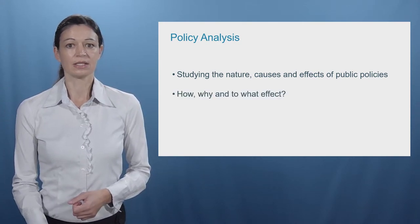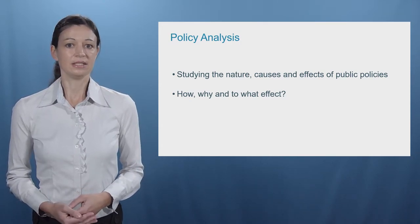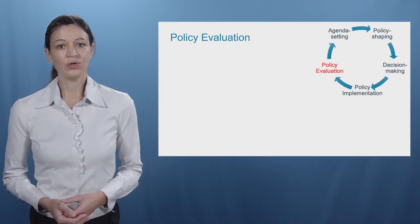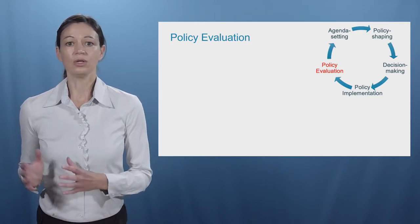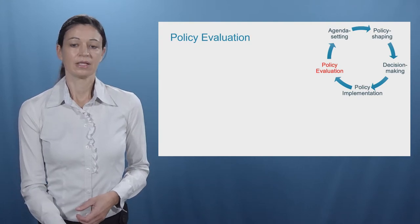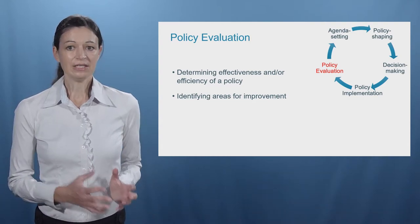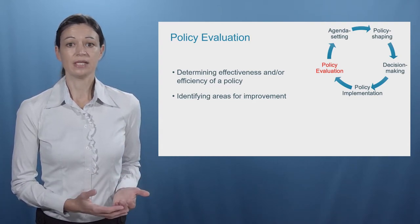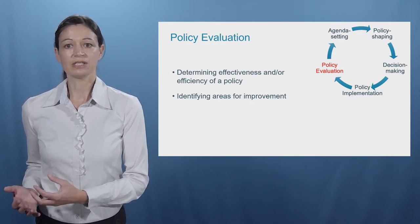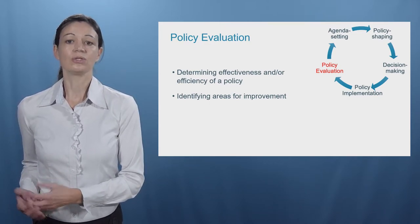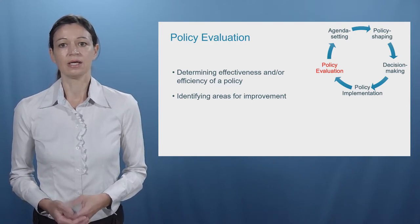Policy analysis answers questions such as: how was a policy adopted? Why was a certain policy design adopted? And what effects did a certain policy have? Let's now focus on policy evaluation. Policy evaluation is one of the stages of the policy cycle, but it is also a strand of academic research. The objective of policy evaluation is to determine the effectiveness and efficiency of a policy. Effectiveness means analyzing whether and to what extent a policy has generated the effects it aims to achieve, while efficiency is about achieving results with the lowest input — this can be financial input but also other efforts — and this links very much to cost-benefit analysis. The ultimate aim of most policy evaluations is to improve policy.